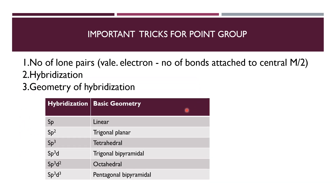Here is a tabular column for the geometry of hybridization. SP means linear geometry. SP2 means trigonal planar. SP3 is tetrahedral. SP3D is trigonal bipyramidal. SP3D2 is octahedral. SP3D3 is pentagonal bipyramidal.